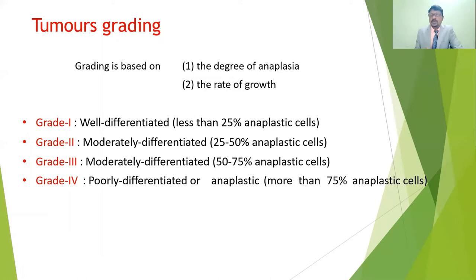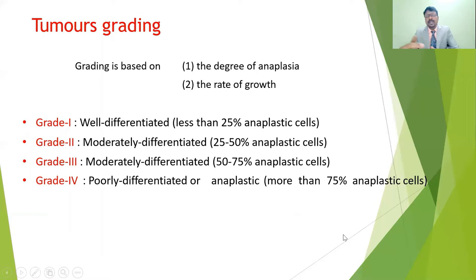Grade 3 is poorly differentiated — the organelles, nucleus, and overall cell appearance are significantly altered in size and shape, with abnormal cells making up more than 50 to 75%. Grade 4 is anaplastic, with more than 75% abnormal cells.